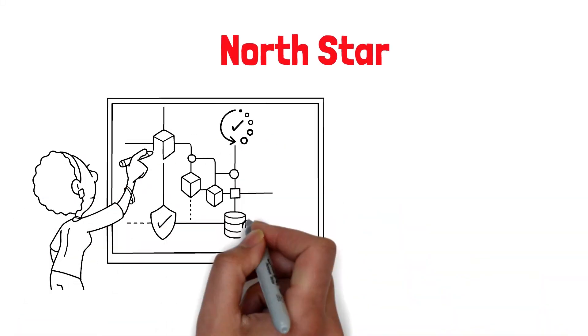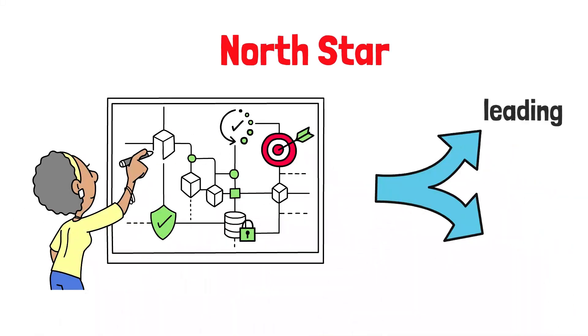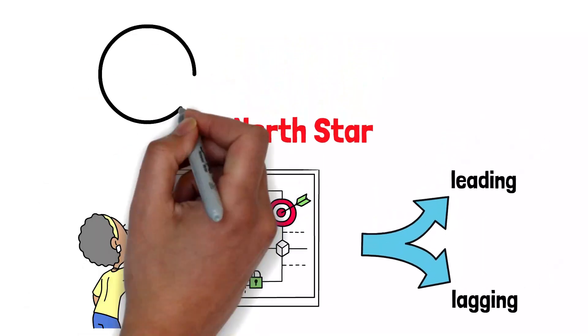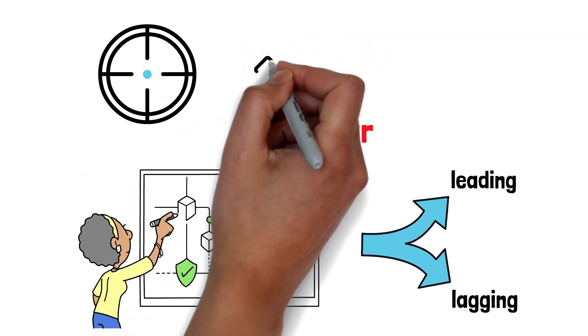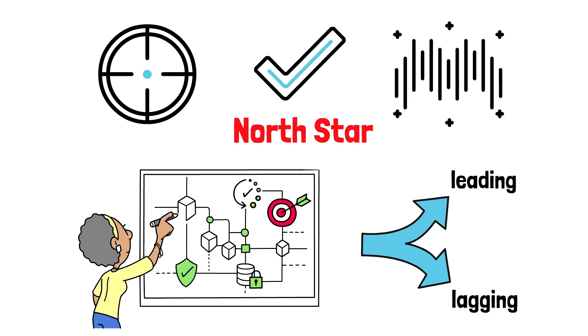In this episode, we'll choose a clear north star, map supporting inputs, separate leading from lagging indicators, and set targets and cadence so every chart points to a decision, not noise.